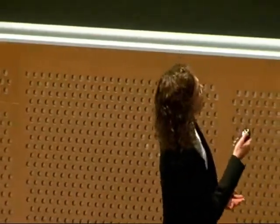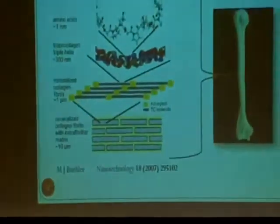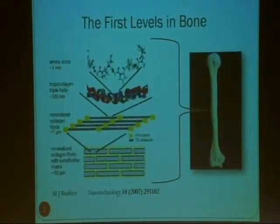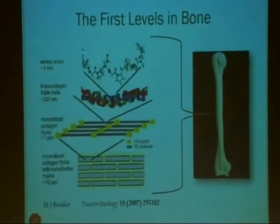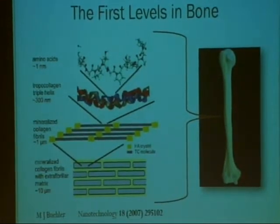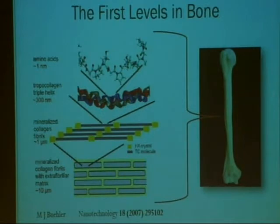Bone is the load-bearing framework of the human body, and it serves a variety of functions such as synthetic, metabolic, and mechanical ones. It is mainly built out of two main constituents: the hydroxyapatite mineral and the collagen protein. These two main building blocks form a complex hierarchical system, where each level has its own functional property.